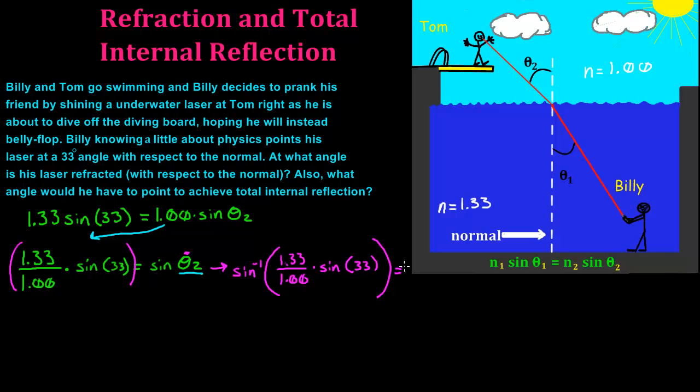And in this case, when you put in your calculator, you will get a 46.4 degree angle. And that is going to equal theta2. So Tom is getting hit at 46.4 degrees with respect to the normal.